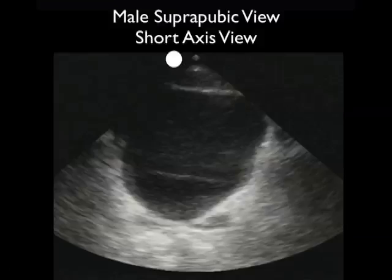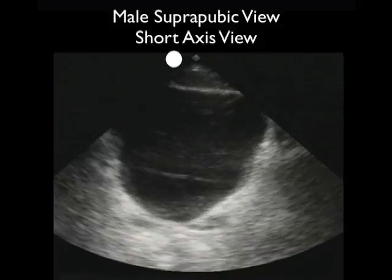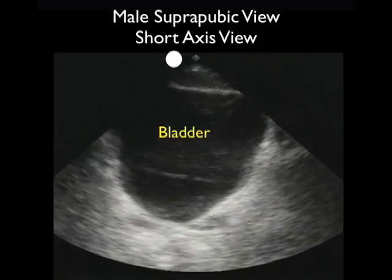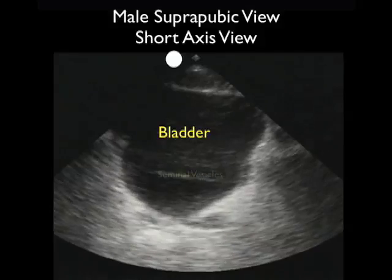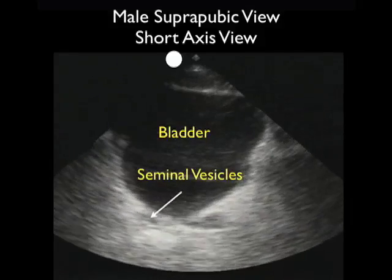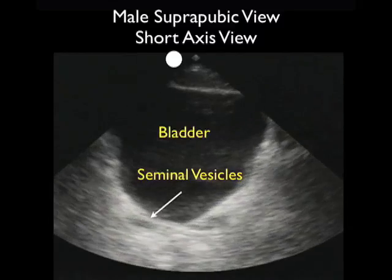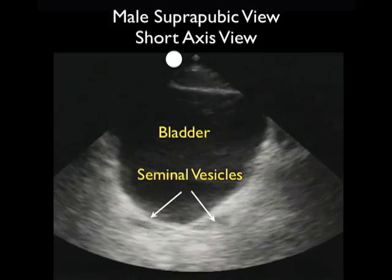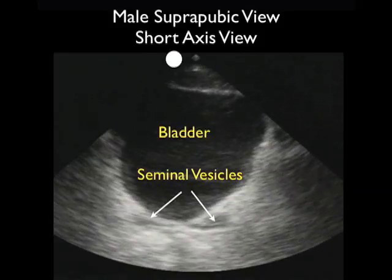Now let's inspect a video clip from a male, in this case a short axis view. We see a large bladder anteriorly, and behind the bladder we see two tubular structures making up the seminal vesicles, a normal finding in a male. If we were looking for free fluid behind the bladder, we'd be looking for a dark or anechoic fluid collection layering out behind the bladder. Notice this is a normal examination.